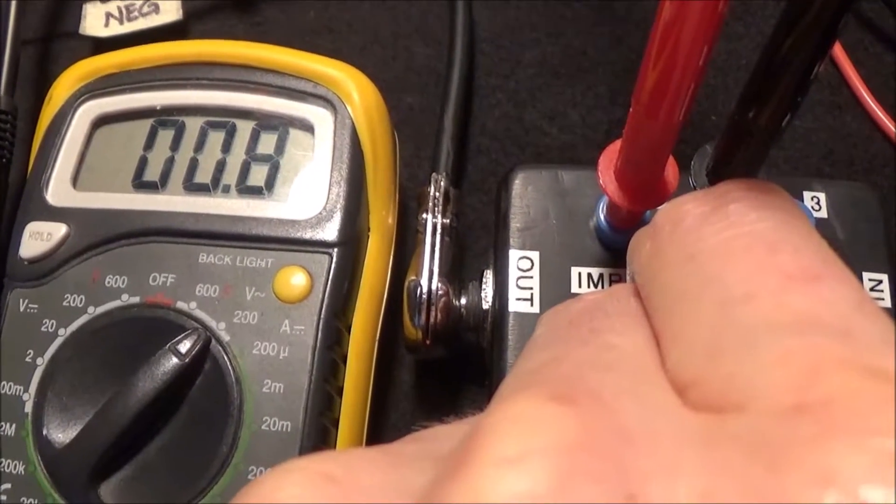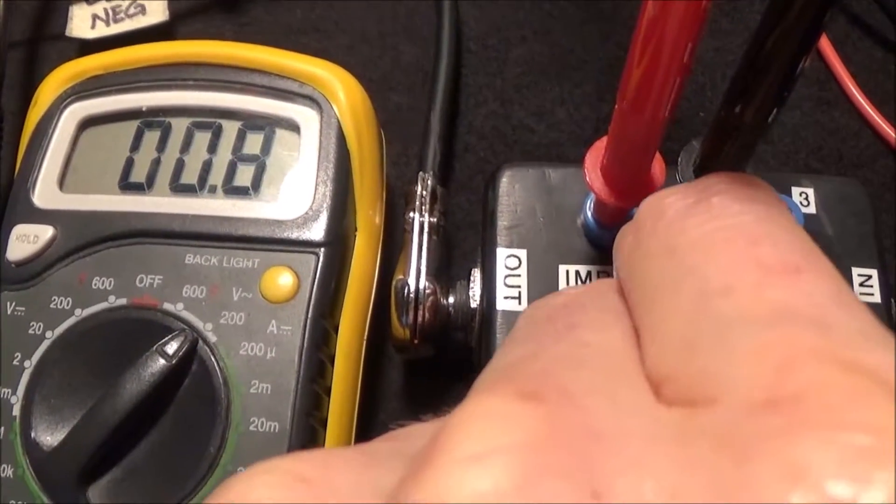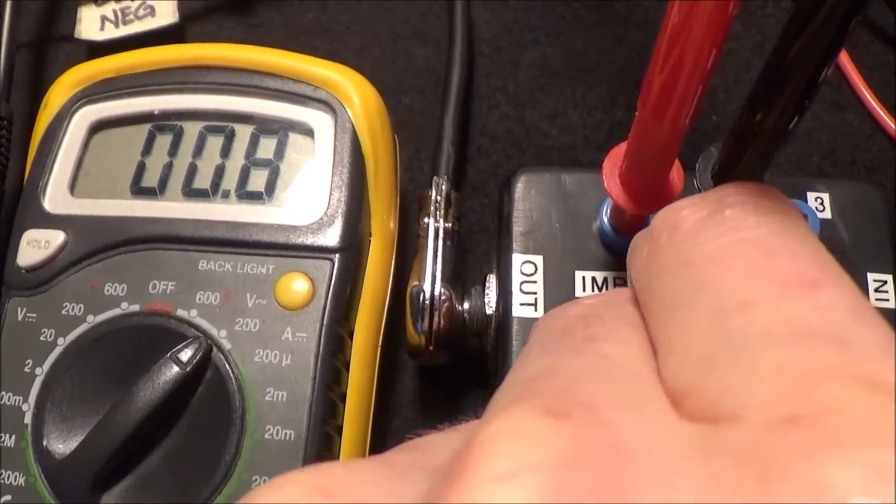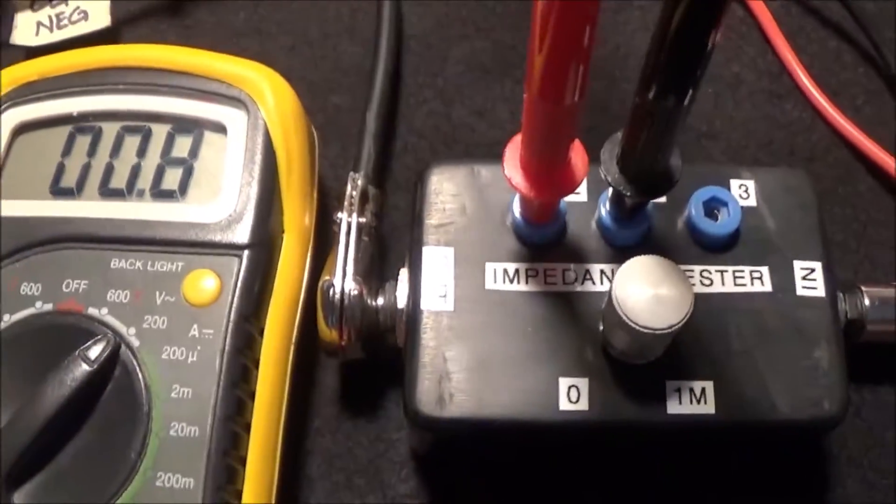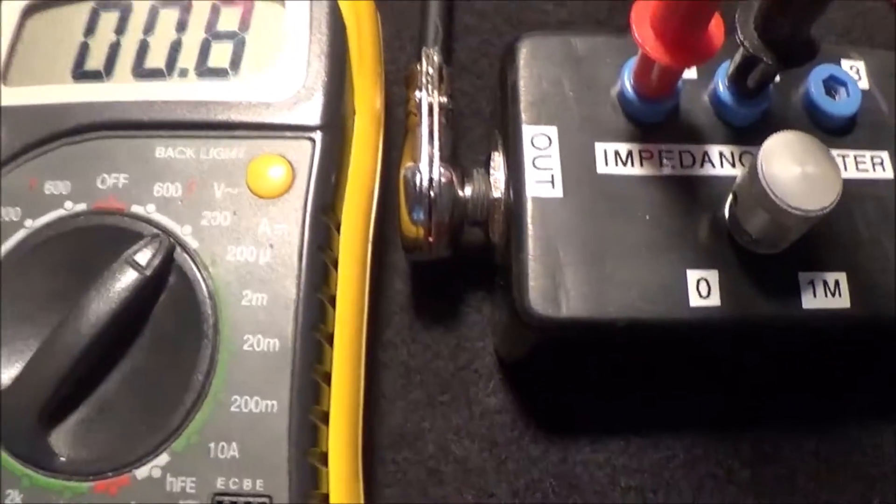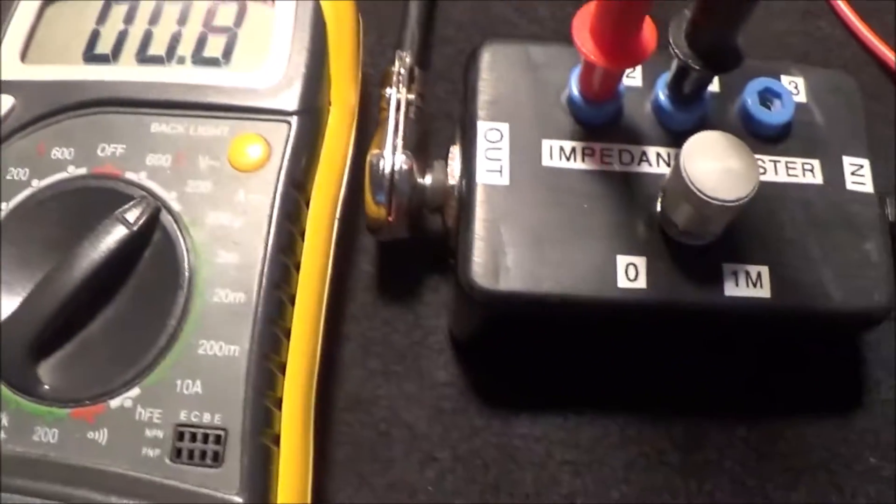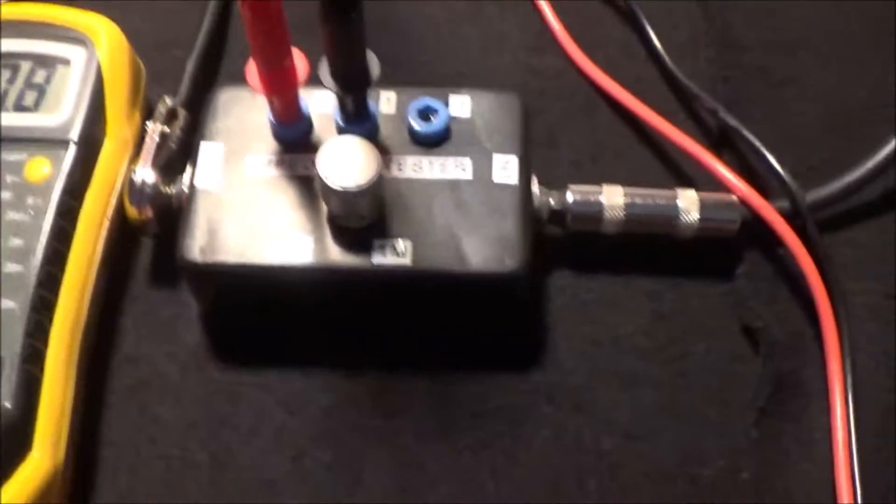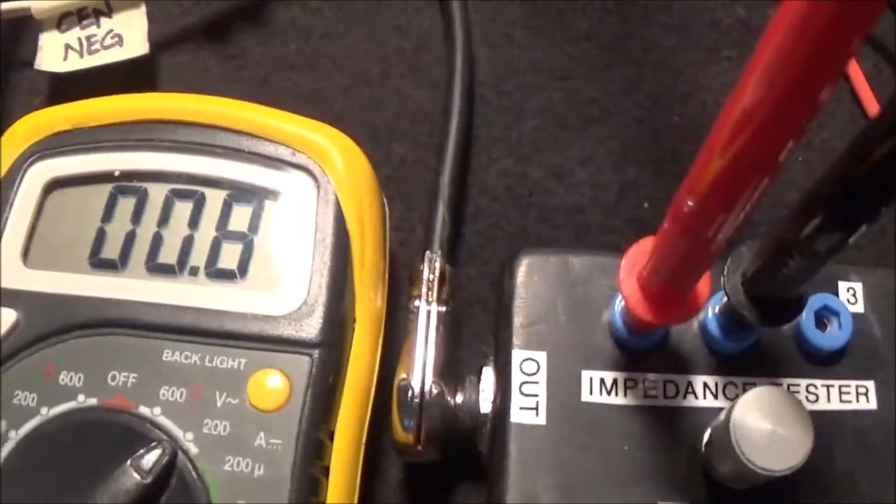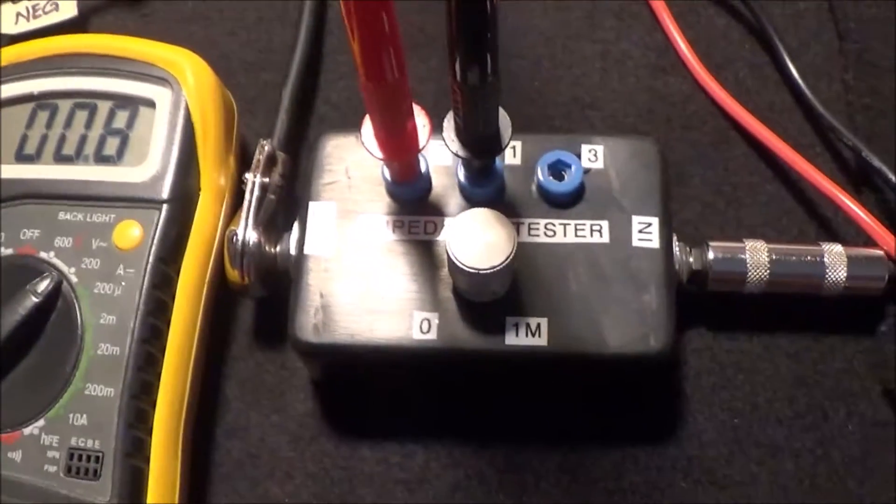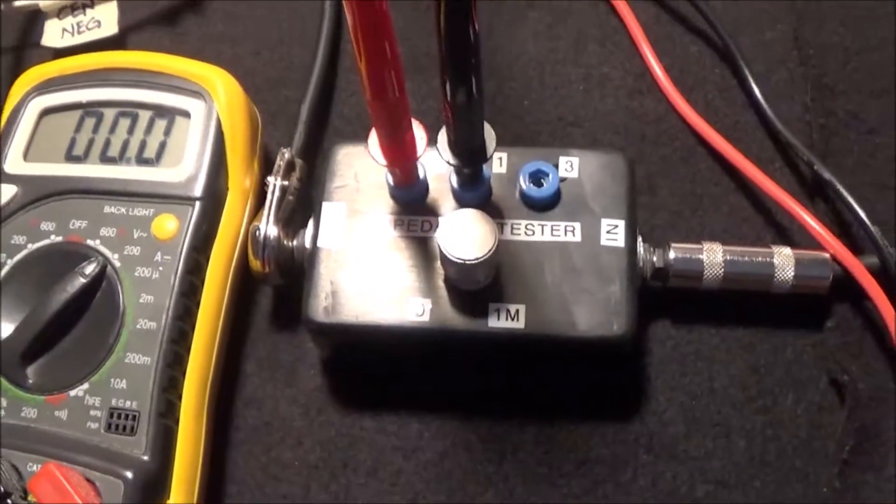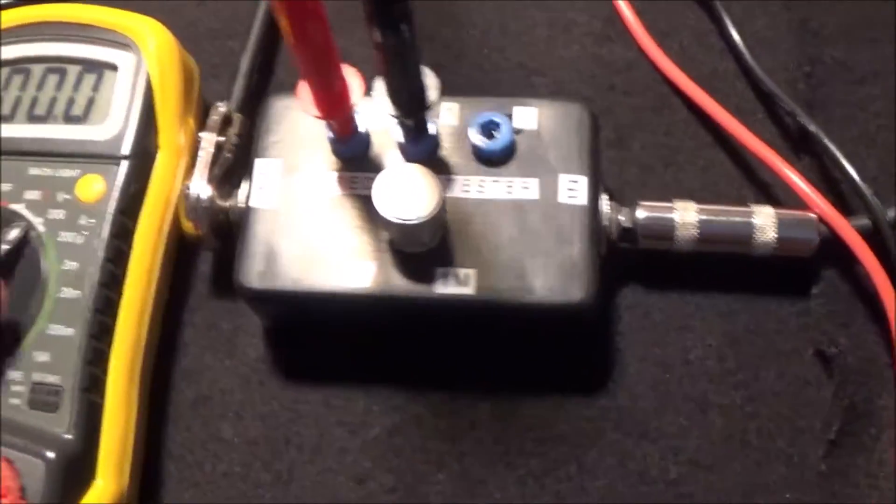I probably could have picked a better number than 1.5 volts because this isn't going to divide evenly. My multimeter is not sensitive enough to go down to 10 volts AC, it's 200. We're at 0.8 volts. We'll go ahead and disconnect the signal.